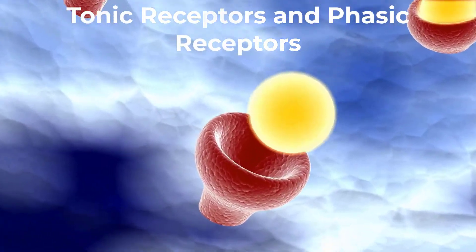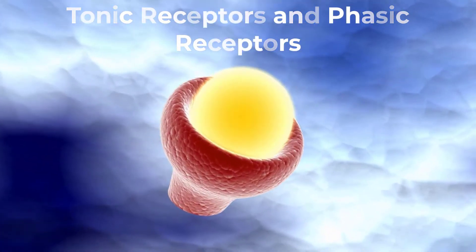There are two categories of receptors: tonic receptors and phasic receptors.